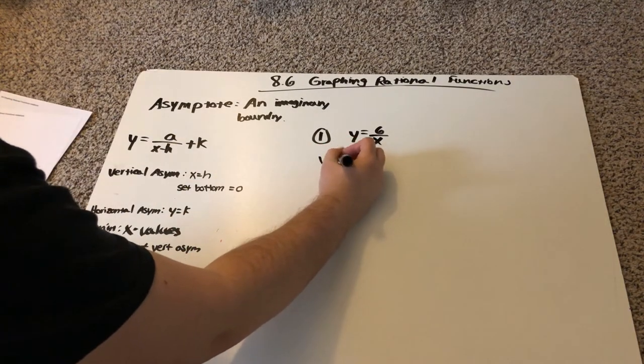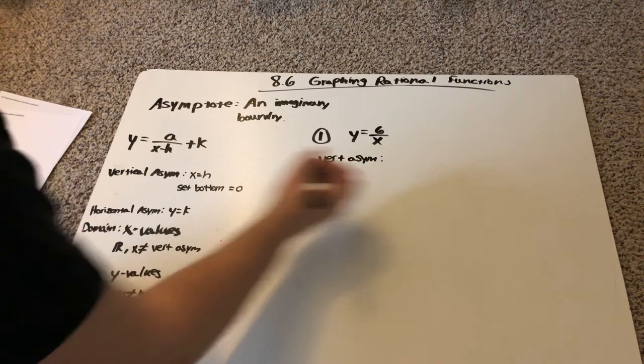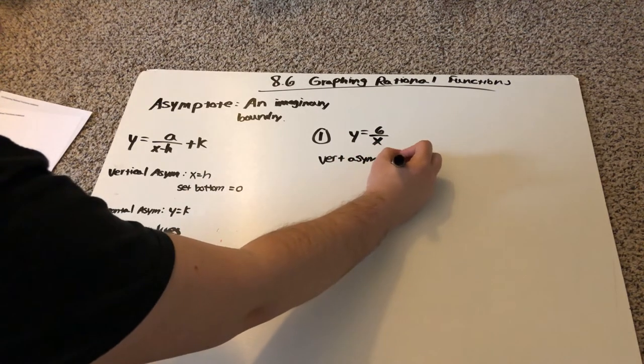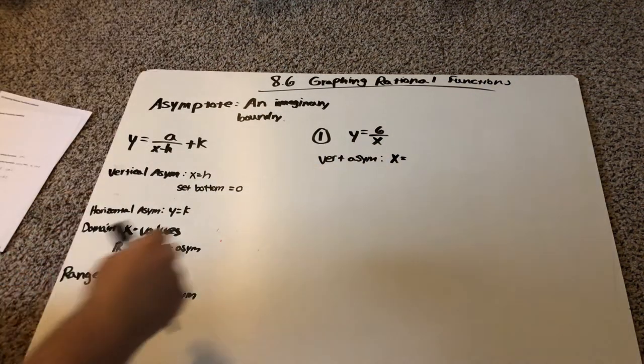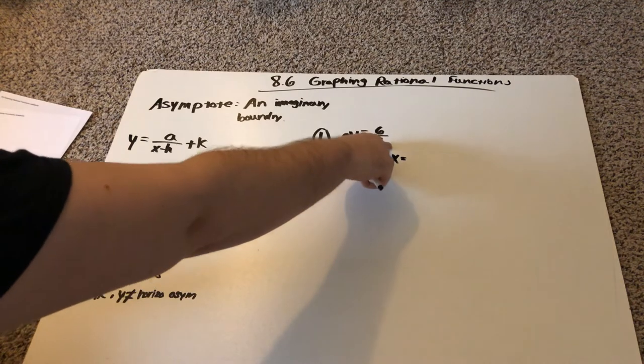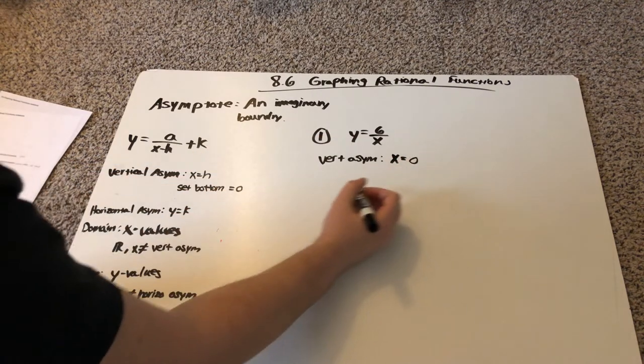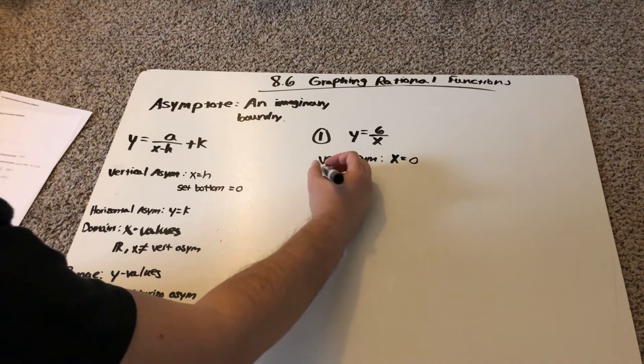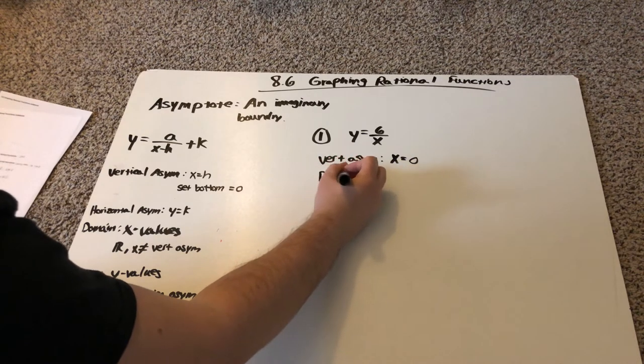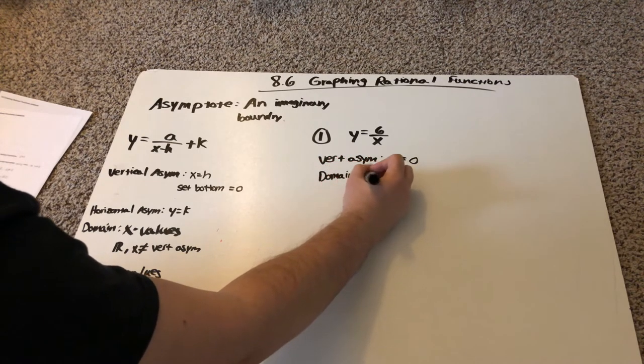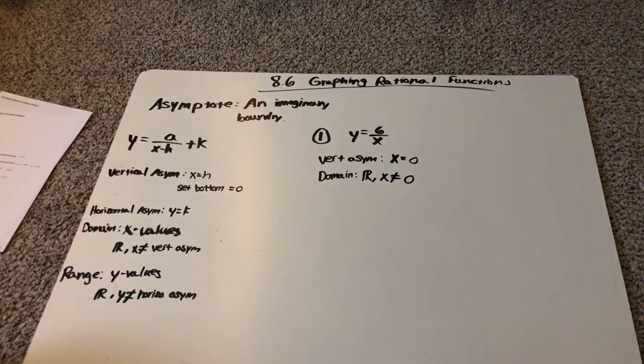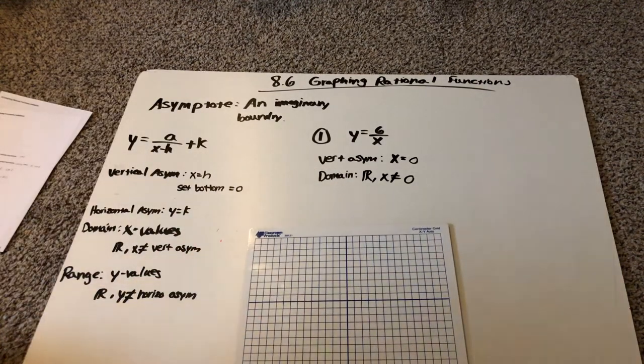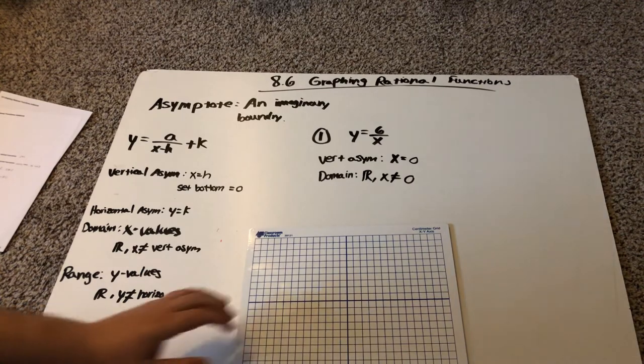The vertical asymptote we're going to say is x is equal, because vertical is going to be x equals some number. We're going to look at this bottom. If we put this equal to zero, we get x is equal to zero. So that means that our domain is all real numbers except x cannot be zero. So on my graph, I'm going to draw a line at x is equal to zero.